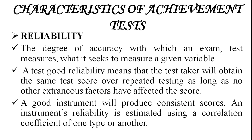Characteristics of achievement test — the first one is reliability. Reliability is the degree of accuracy with which a test measures what it seeks to measure for a given variable. A test with good reliability means that the test taker will obtain the same test score over repeated testing, as long as no other extraneous factors have affected the score. A good instrument will produce consistent scores, and its reliability is estimated using a correlation coefficient.